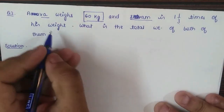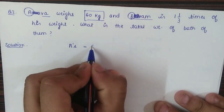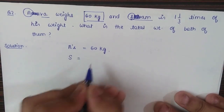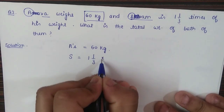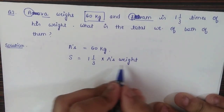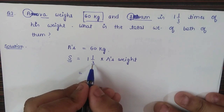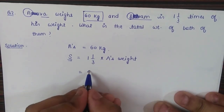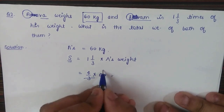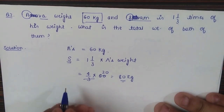Let's call them A and S. A's weight is 60 kg, and S is 1 whole 1/3 times A's weight. We convert the mixed fraction to an improper fraction: 1 and 1/3 equals 4/3. So S's weight equals 4/3 times 60, which equals 80 kilograms.